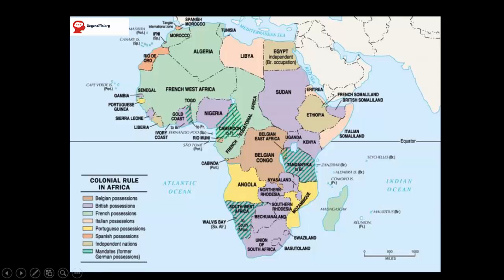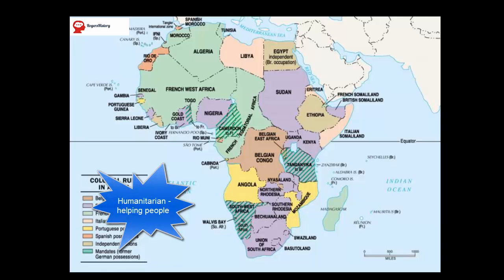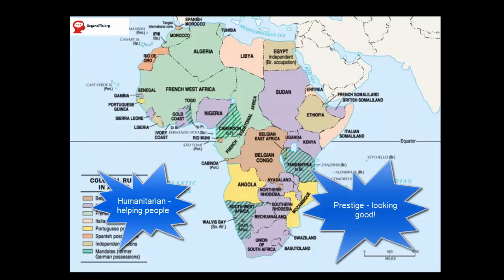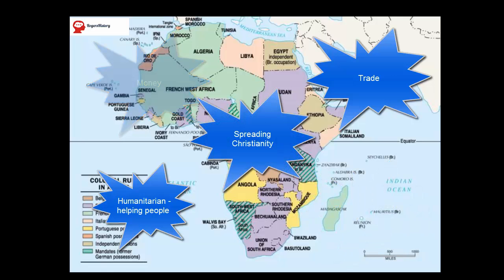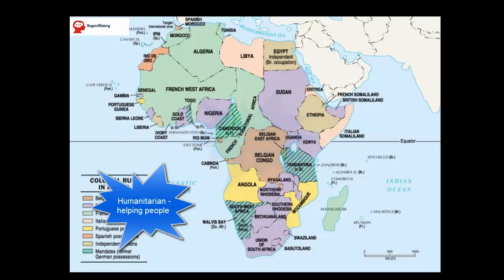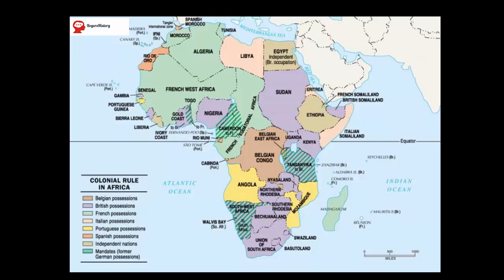I always find the scramble for Africa such an interesting topic because of how controversial it was. Between 1880 and 1900, the vast majority of Africa was colonised by European powers. The reasons were various: humanitarian reasons to genuinely help the populations, but mainly it was about prestige, money, and trade. There was also a religious element — almost Christianising large parts of Africa — reflecting the superiority complex that European powers had and were now able to express.